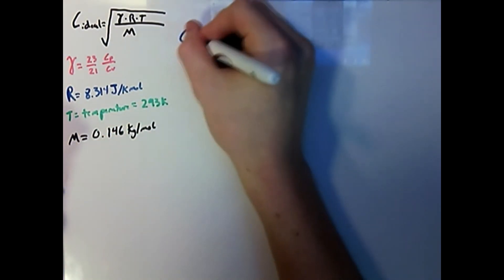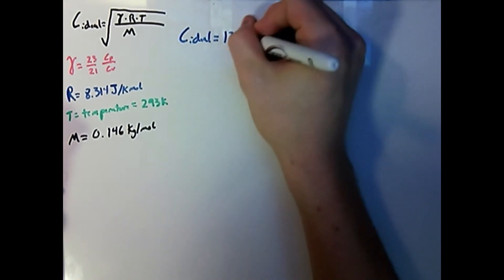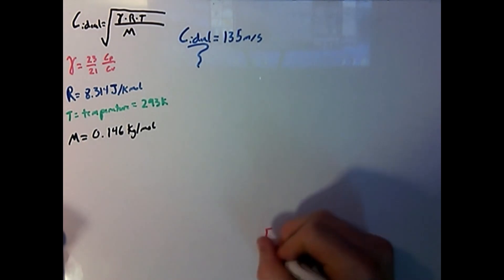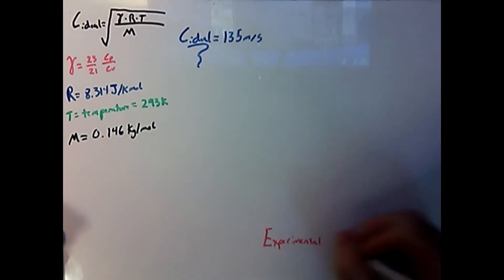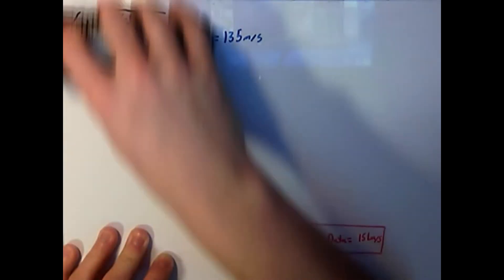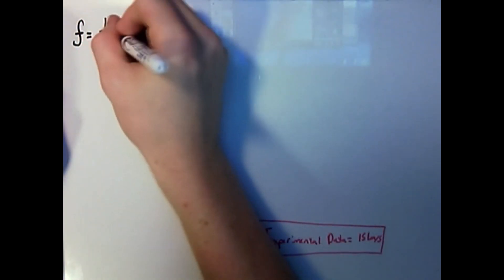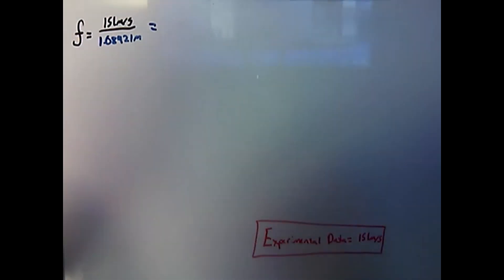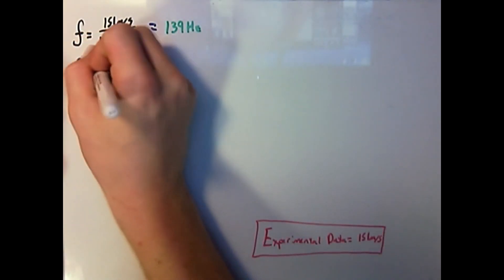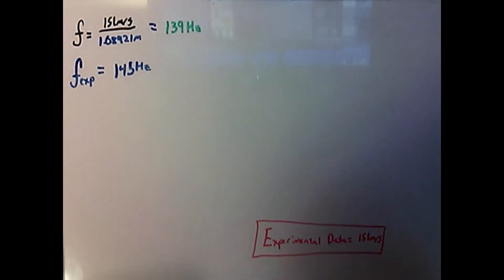Plugging all these values in, we come up with the value of 135 meters per second. However, this is still for an ideal gas. Experimental data shows it being closer to 151 meters per second. Plugging 151 meters per second into our frequency relation will show us that we should have gotten a frequency of around 139 hertz. The actual frequency we obtained was 145 hertz. This gives us a 4.3 percent error.